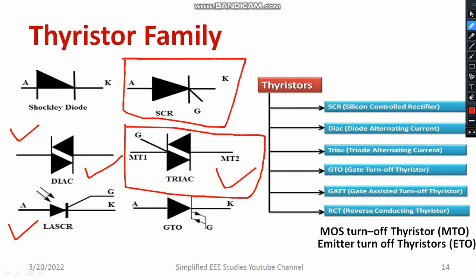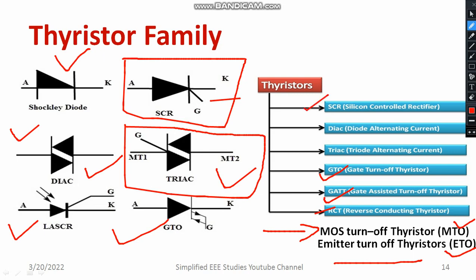Another type is LASCR — Light Activated Silicon Controlled Rectifier. Also, Gate Turn-Off Thyristor (GTO) is a special variety with more advantageous features compared to SCR. Shockley diode is also one family member. We can also see different varieties like GATT — Gate Assisted Turn-off Thyristor — and RCT — Reverse Conducting Thyristor. A few more are available: MTO stands for MOS Turn-Off Thyristor, and ETO stands for Emitter Turn-Off Thyristor.